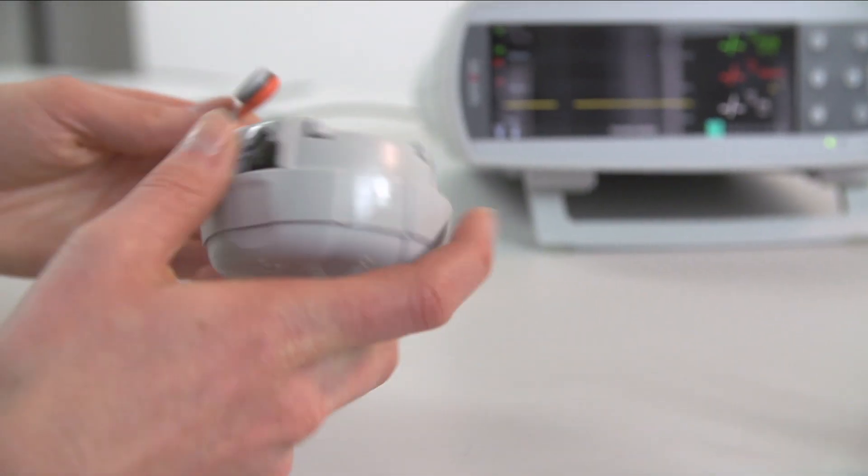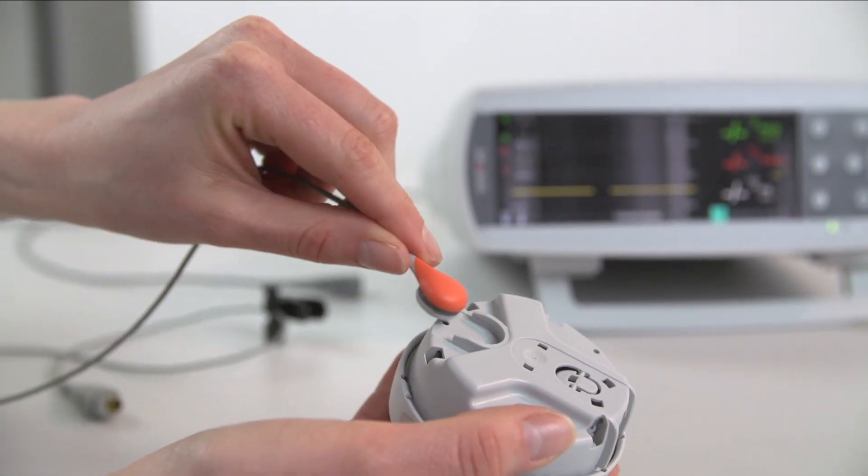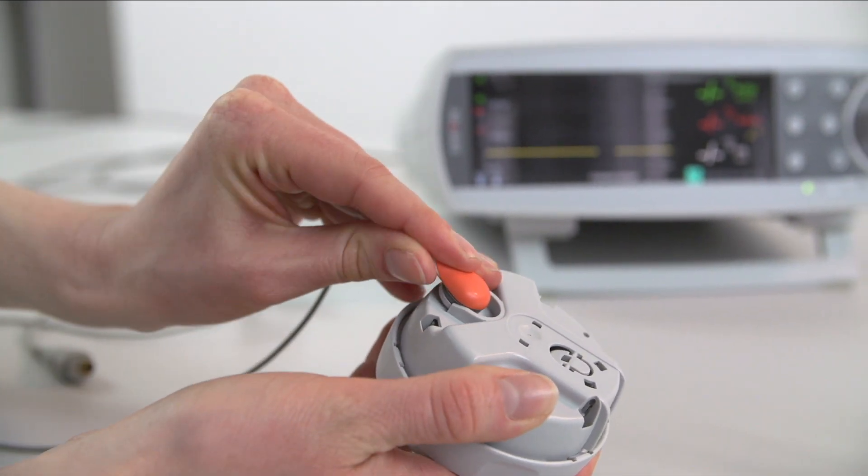First, remove the old membrane from the sensor using the bottom part of the membrane changer. If the membrane does not come off easily, you can first soak the sensor with the membrane on.